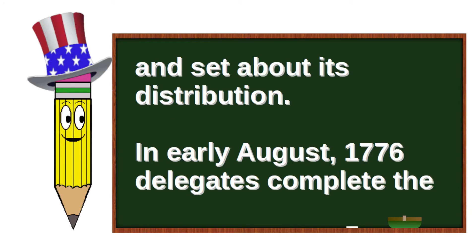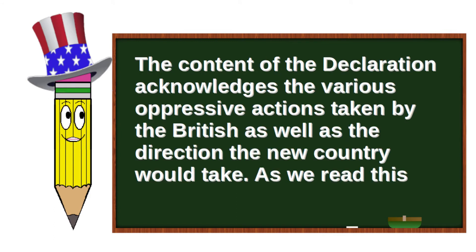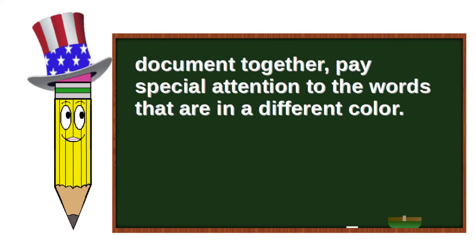In early August 1776, delegates completed the signing of the Declaration of Independence. The content of the Declaration acknowledges the various oppressive actions taken by the British, as well as the direction the new country would take. As we read this document together, pay special attention to the words that are in a different color.